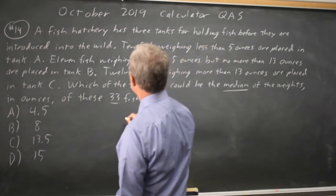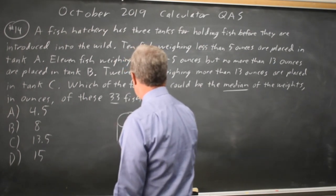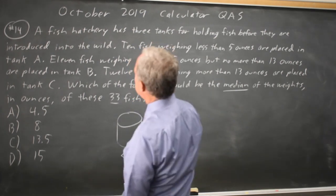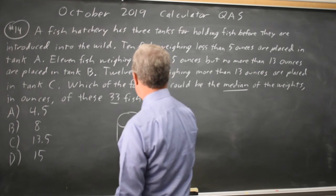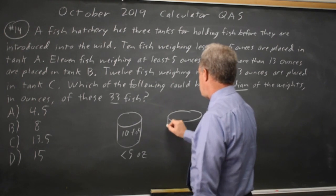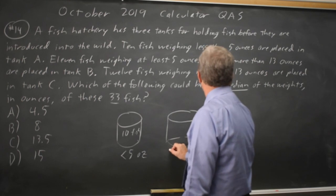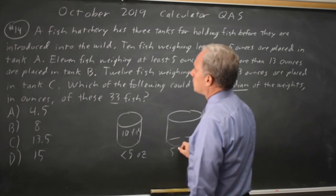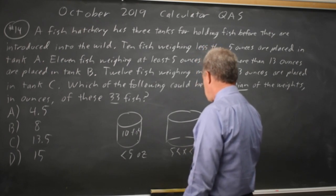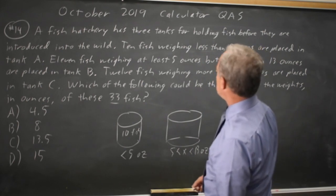So I have 3 tanks, and this is less than 5 ounces, and I have 10 fish in there. And then I have another tank that is 5 to 13 ounces, and I have 11 in there.